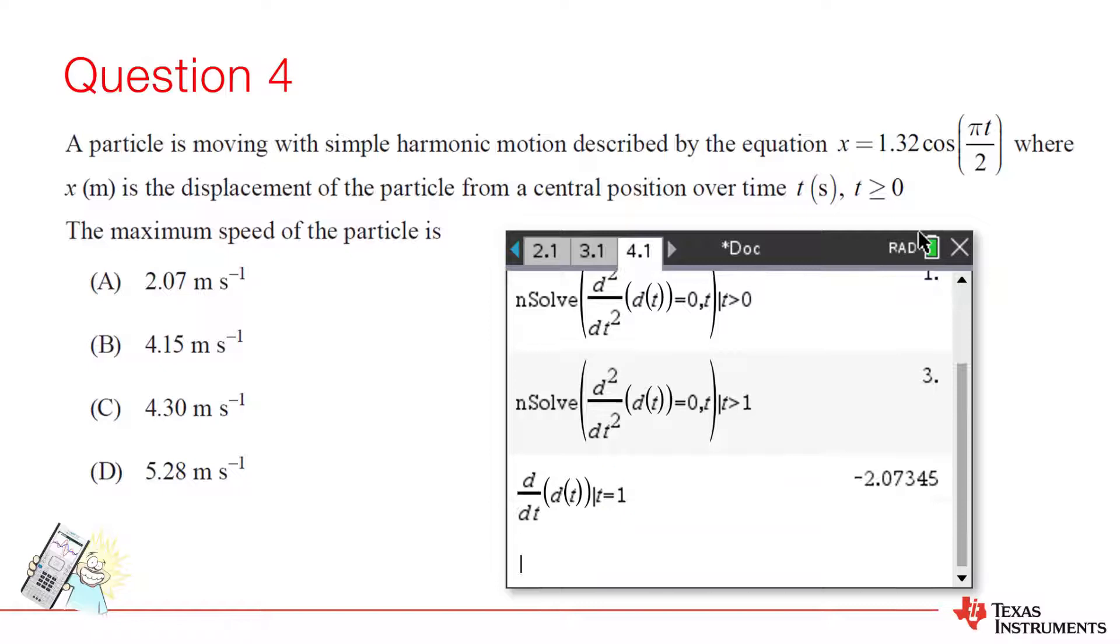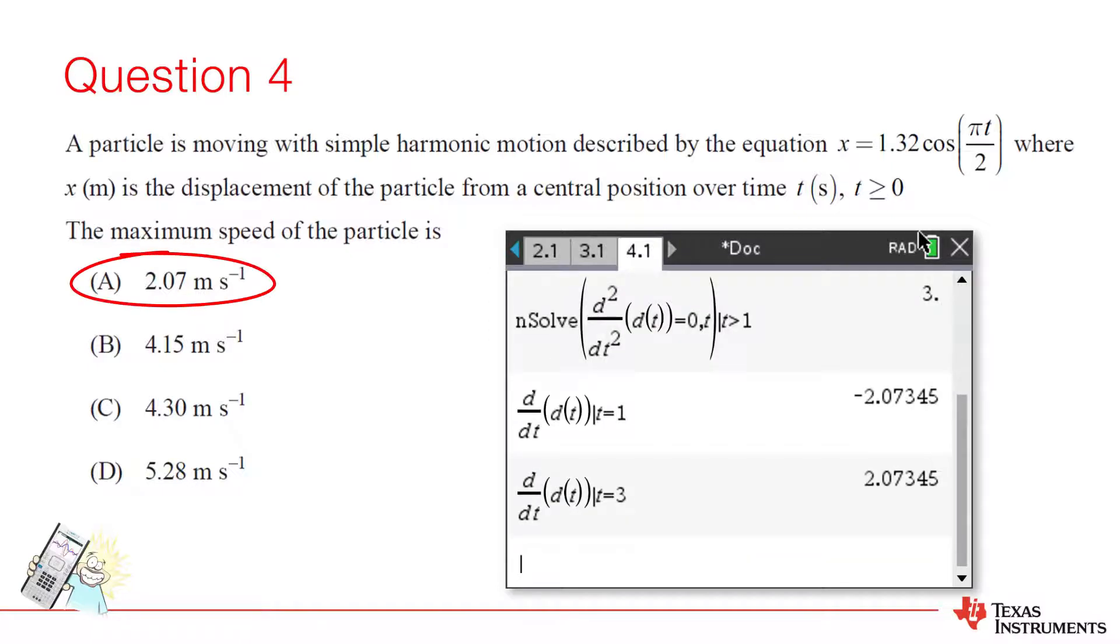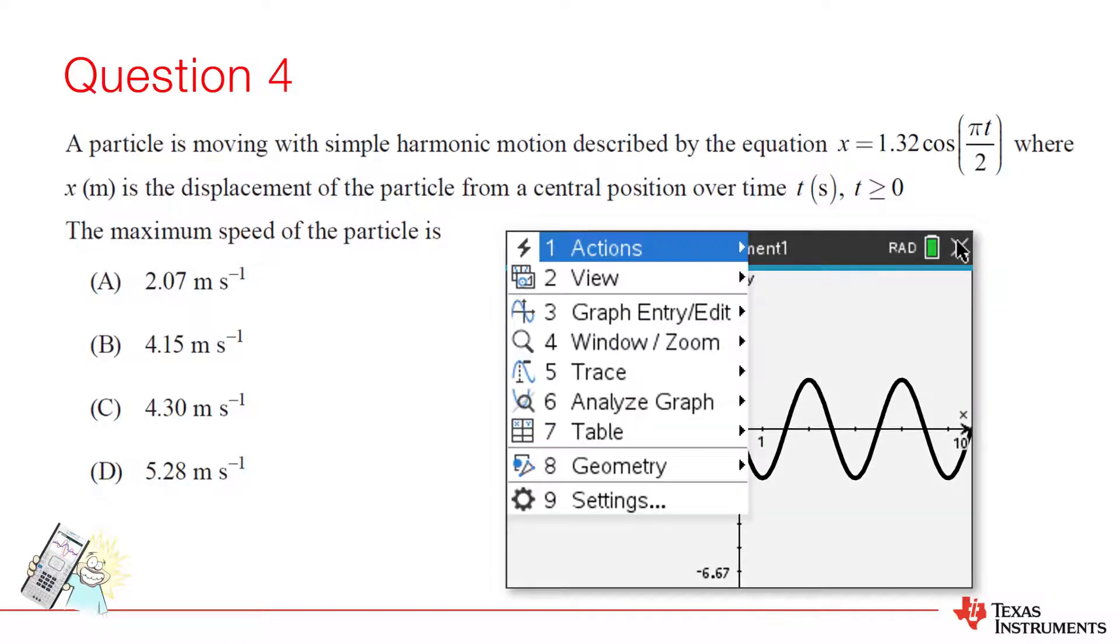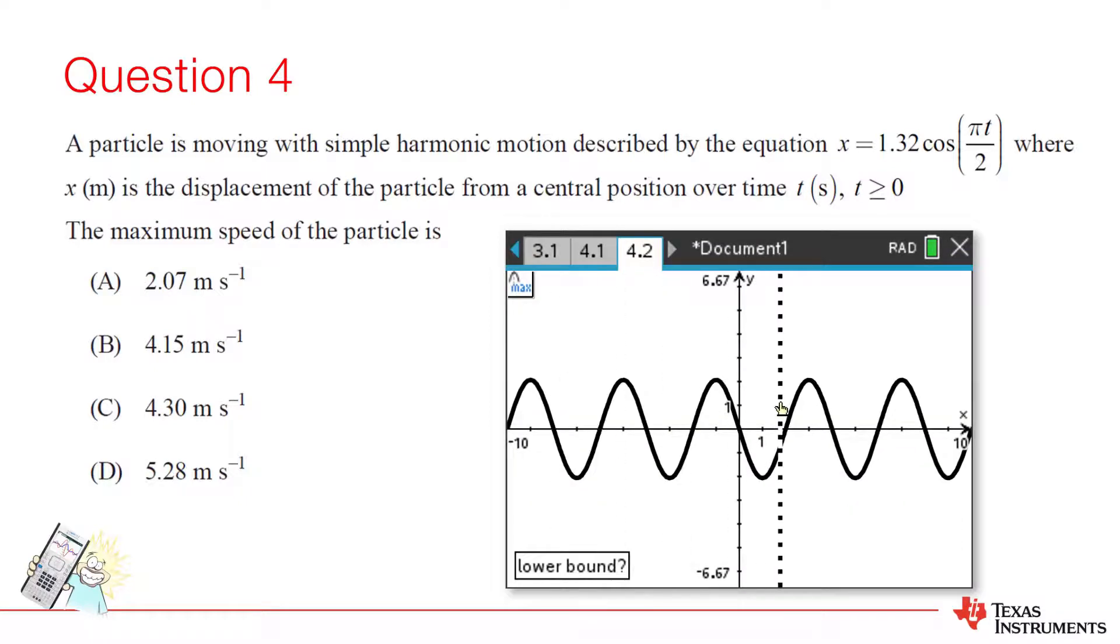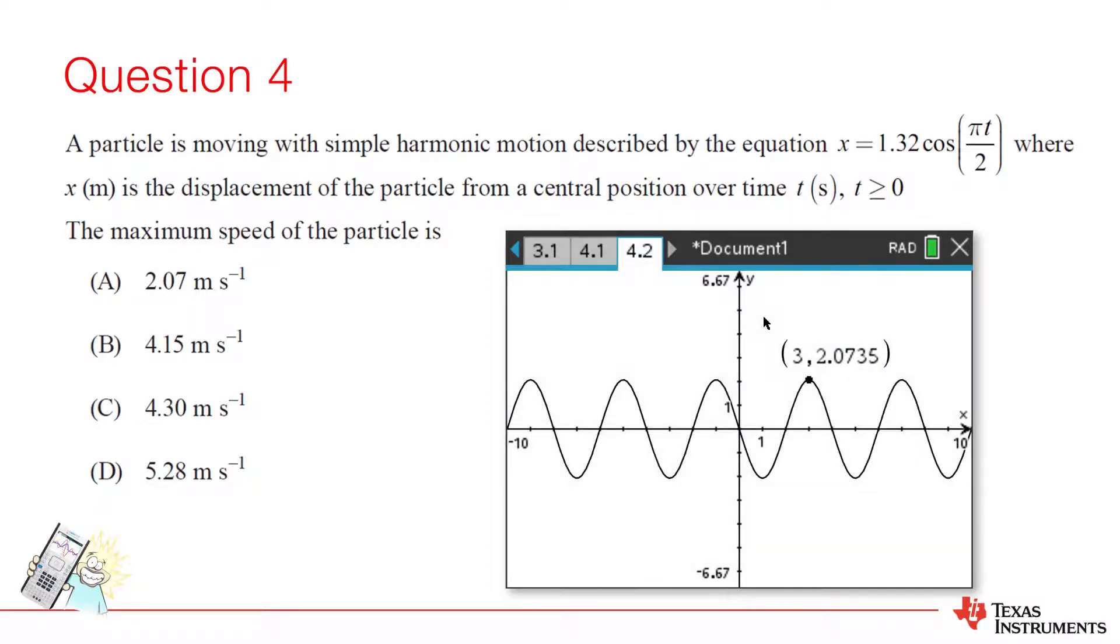And we arrive at 2.07 meters per second. The answer is option A. Of course, there are other ways to solve this problem. We could have just graphed the velocity function, and then found the maximum. This is actually a more direct approach, as it yields a velocity, rather than working out the time and then substituting.